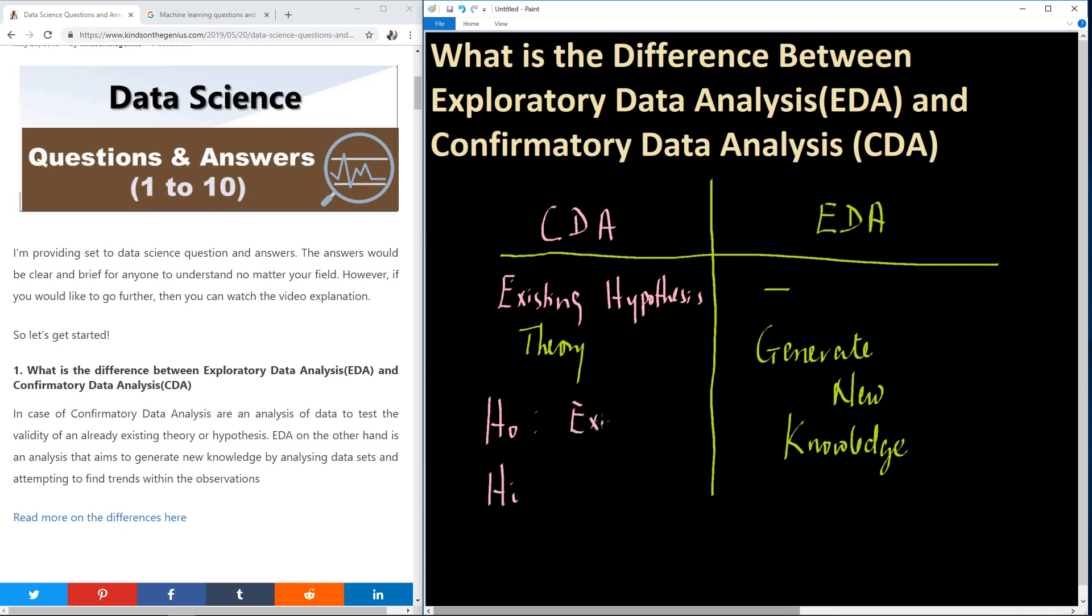In the simplified way, we have H0 to be an existing hypothesis, and H1, or HA, will be alternative.